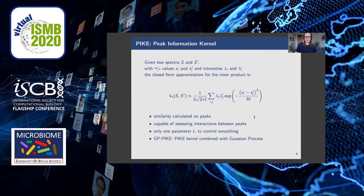I want to point out some properties of the PIKE kernel. First, the similarity is calculated directly on the peaks, which are defined through the mass-to-charge and intensity values. So the binning step becomes obsolete when using our PIKE kernel. Even more, it uses a more accurate representation because by not doing the binning step, the x values are not altered and we can use the more accurate x values directly. The kernel can also handle sparse representations of MALDI-TOF spectra, and the input spectra can have different cardinalities.